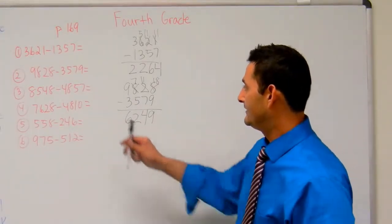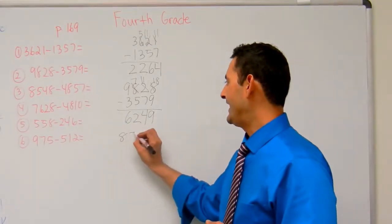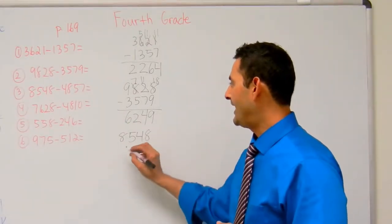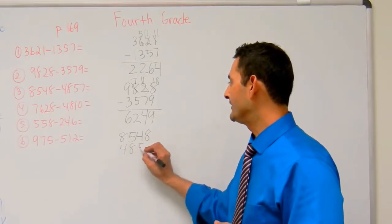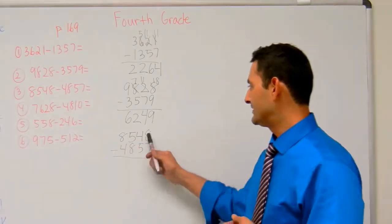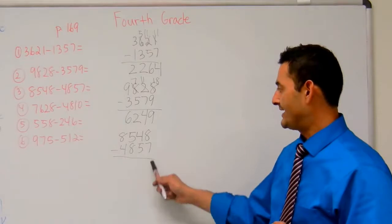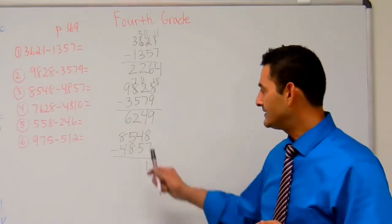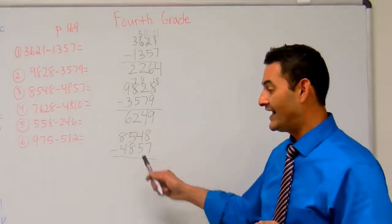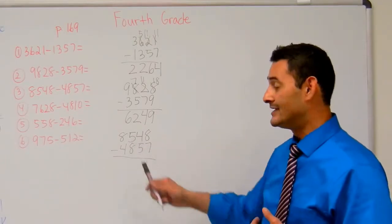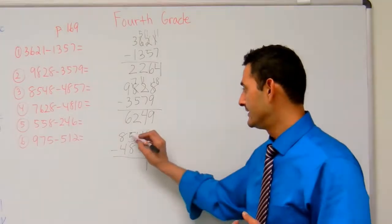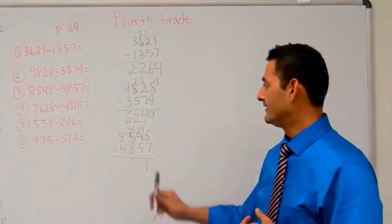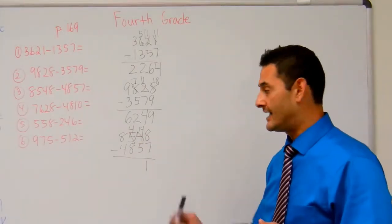Now let's take a look at number 3. I've got 8,548 minus 4,857. Let's start with the 1's place: 8 minus 7 — I can do that, that's 1. Let's look at the 10's place: 4 minus 5 — I can't do that. I'm going to have to borrow 10 10's from the 100's. That's going to become a 4, and that will become 14. 14 minus 5 — that's 9.